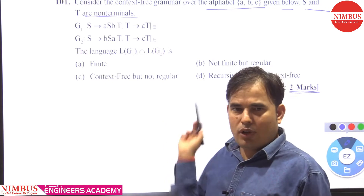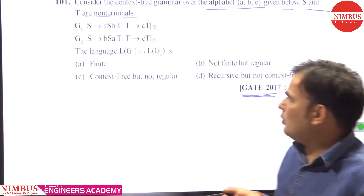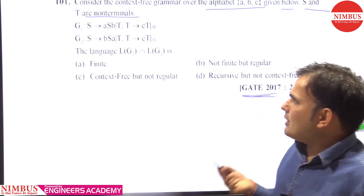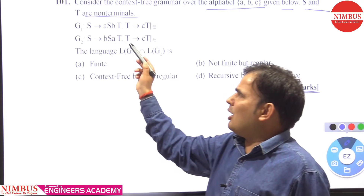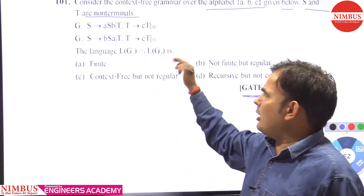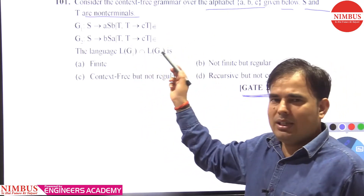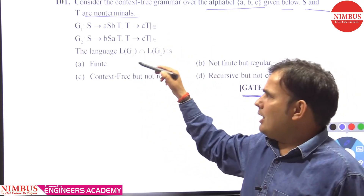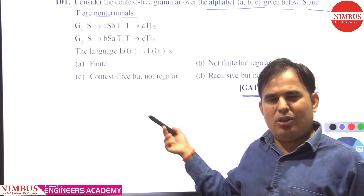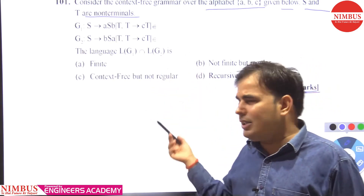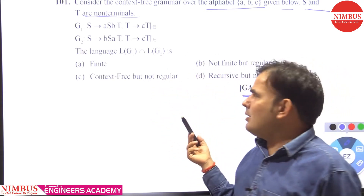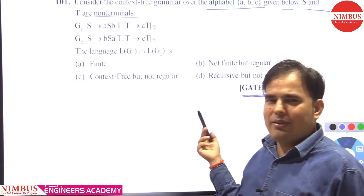First, we need to identify whether G1 is regular, context-free, context-sensitive, or a recursive language. Similarly, we need to recognize whether G2 is regular, context-free, context-sensitive, or recursive.